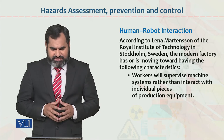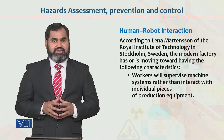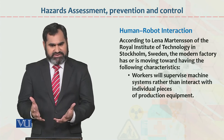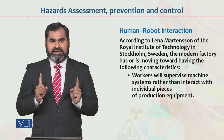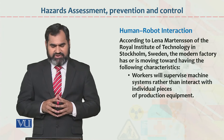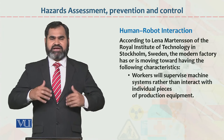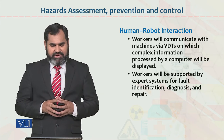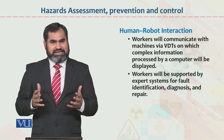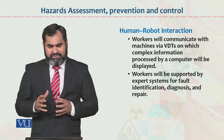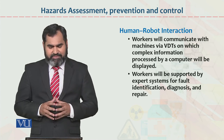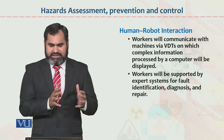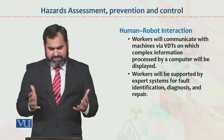According to Lina Mertens of the Royal Institute of Technology in Stockholm, Sweden, the modern factory has or is moving towards having the following characteristics: workers will supervise machines, not do work manually. Workers will use technology rather than interact with individual pieces of production equipment. Workers will work with the help of technology and will not work manually. Workers will communicate with the machines via VDTs — Video Display Terminals — on which complex information is displayed. Using technology, robots, and automation, you can develop human-robot interaction considerably.